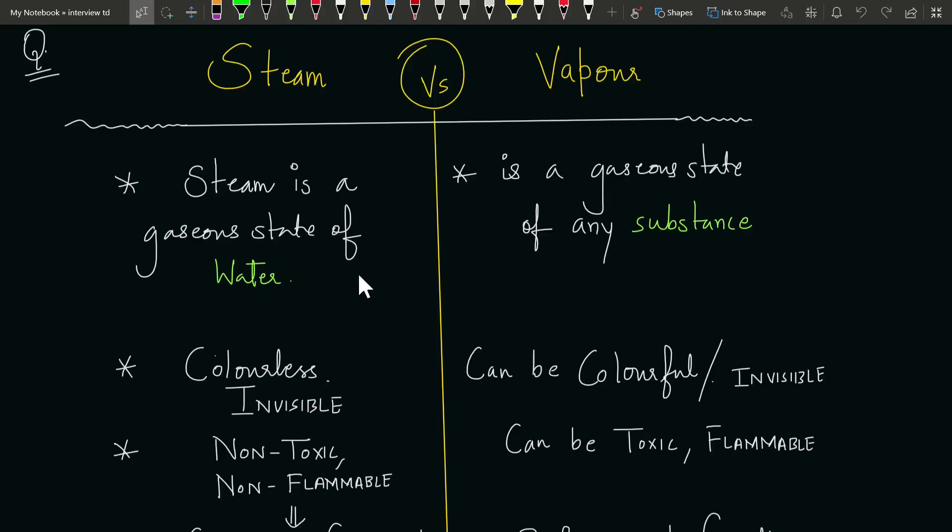What is the difference between a steam and vapor? This is an important question that we use these words interchangeably, which is not correct. We think that steam and vapor are the same things, but they are quite different. Let's distinguish them.